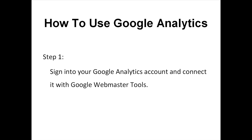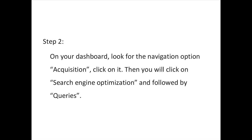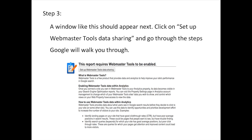Step 1: Sign into your Google Analytics account and connect it with Google Webmaster Tools. You can then track your rankings, the number of impressions your listings are gaining, and also click-through rates. Step 2: On your dashboard, look for the navigation option Acquisition. Click on it, then click on Search Engine Optimization, followed by Queries. A window like this should appear next. Click on Set Up Webmaster Tools Data Sharing and go through the steps Google will walk you through.